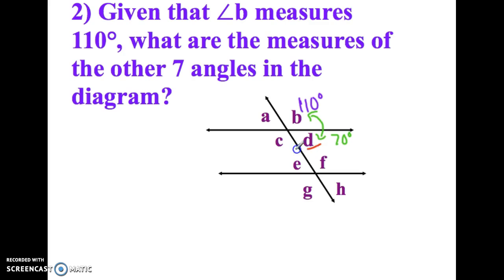Then you might notice that D and C also make a straight line. So 70 and 110 is 180. And then you might also know that C and A make a straight line. So 110 plus 70 is 180.